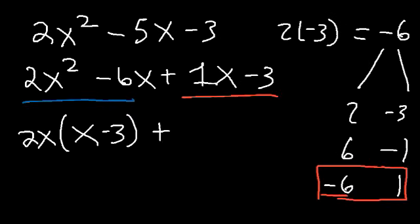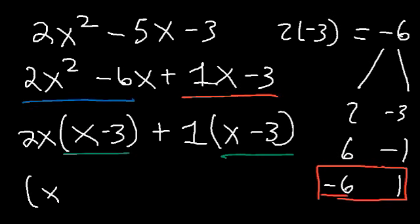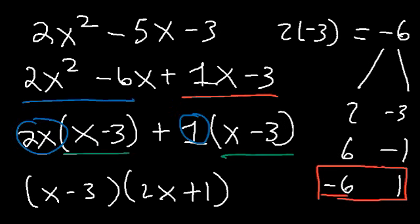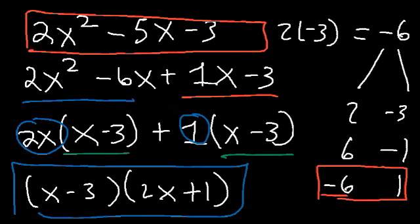In the last two terms there's no greatest common factor to take out, so just take out a 1. 1x divided by 1 is x, and negative 3 divided by 1 is negative 3. Notice that we have a common factor of x minus 3. If we factor out x minus 3, we're left with 2x from the first term and 1 from the second. So 2x squared minus 5x minus 3 factors to x minus 3 times 2x plus 1.